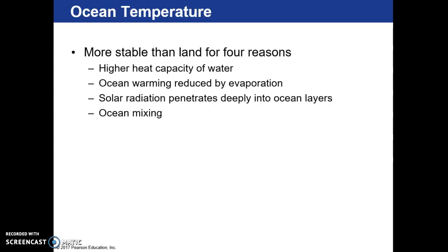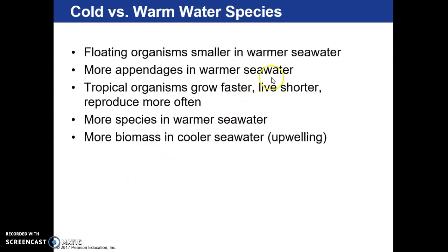The ocean maintains that lower temperature range for several reasons. Water holds heat very well — it doesn't take it in easily and doesn't release it easily once it has it. Ocean temperature is also reduced by evaporation, which helps keep temperatures stable. Solar radiation penetrates deeply into ocean layers, and the ocean is constantly in motion, so mixing is a huge factor in keeping those temperatures stable.